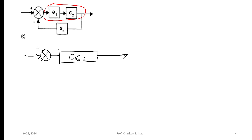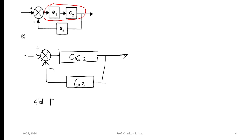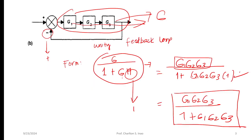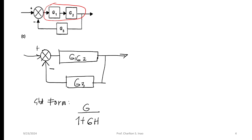There is a feedback path with G3 going back to the summing junction, and it is negative. Using the standard form: G over 1 plus G×H, where G is the feed-forward and H is the feedback element.